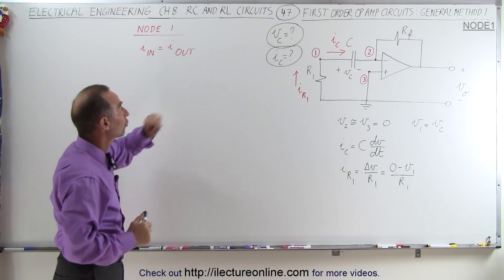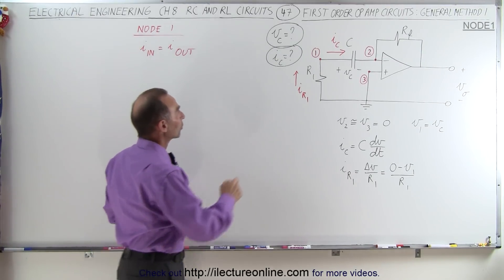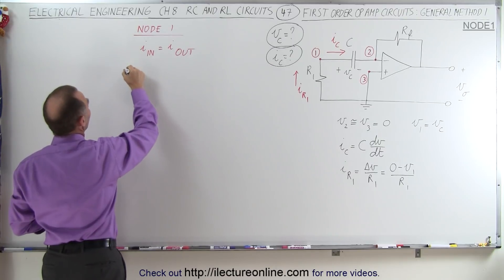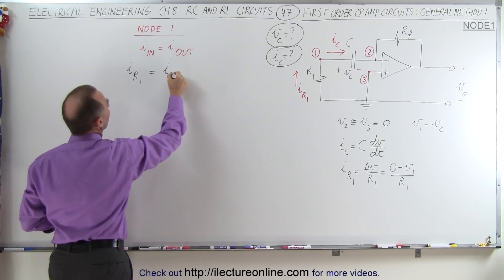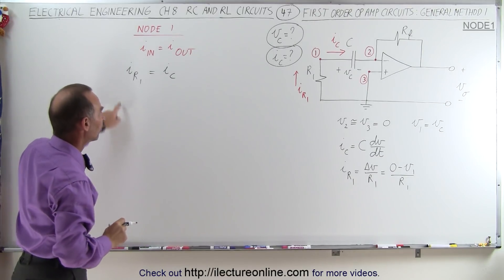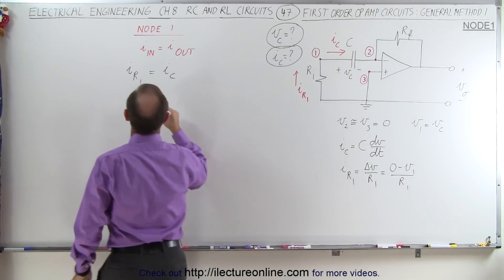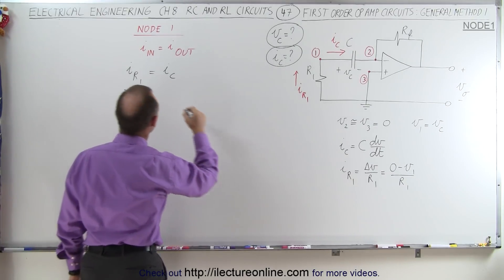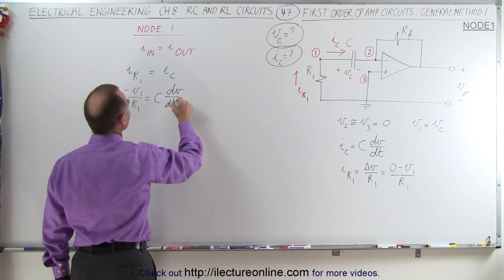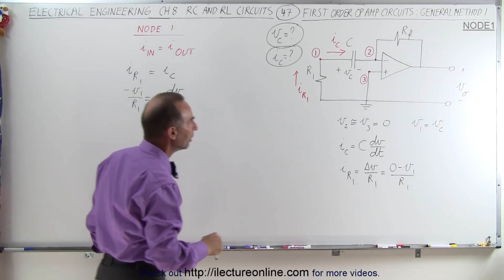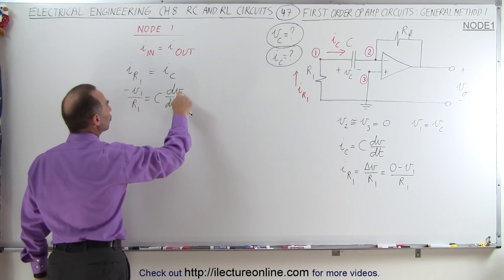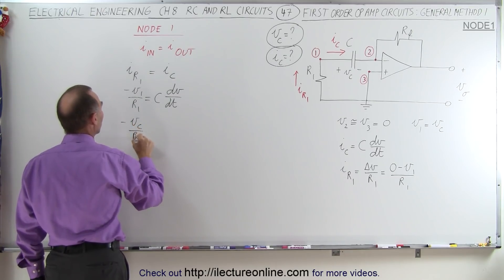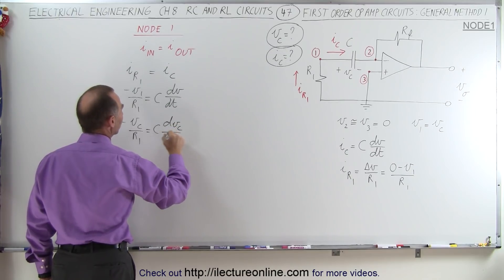Now we're ready to solve using node 1, saying that the current into node 1 equals the current leaving node 1. In other words, the current I through the resistor must equal the current through the capacitor. The current through the resistor is minus V1 over R1, so that equals minus V1 over R1, which equals I sub C, and I sub C equals the capacitance times dV/dt. Since V1 equals Vc, we can write: minus Vc over R1 equals C times dVc/dt.